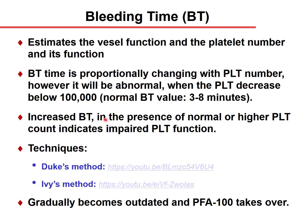Increased bleeding time in the presence of a normal or higher platelet count indicates impaired platelet function. Two methods are used: the Duke method and the IVS method, which is most commonly used in Hungary. Both are becoming outdated due to poor standardization and high inter-operator variability. The PFA (Platelet Function Analyzer 100) is now taking over bleeding time measurement.